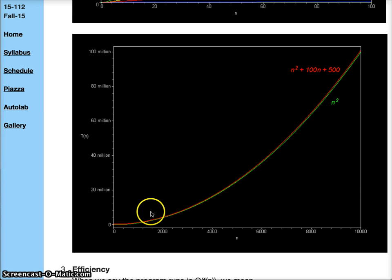If we look at the long asymptotic behavior, we can see that lower order terms don't matter. Here we have two functions: N squared, and N squared plus 100N plus 500. When the input size gets to 10,000, notice how the actual growth and the path is pretty much identical.